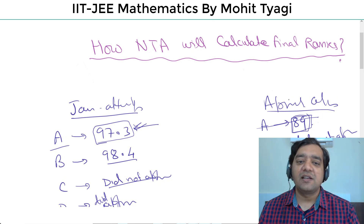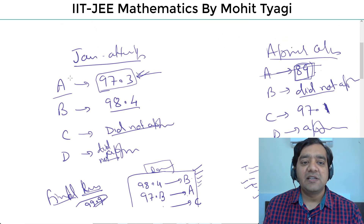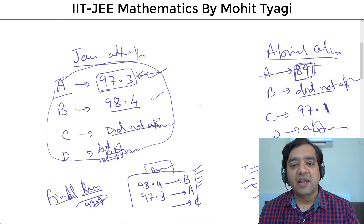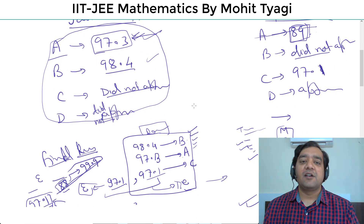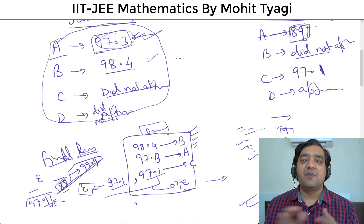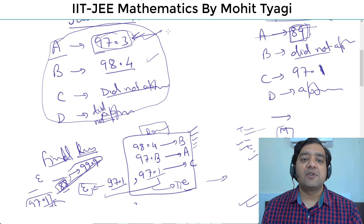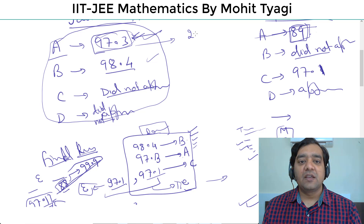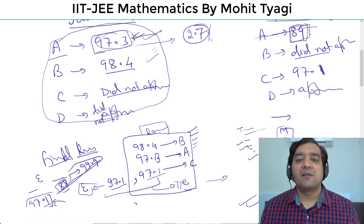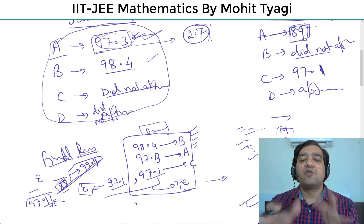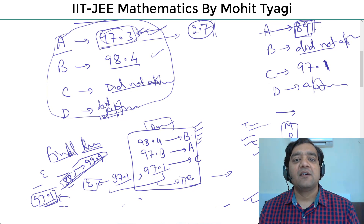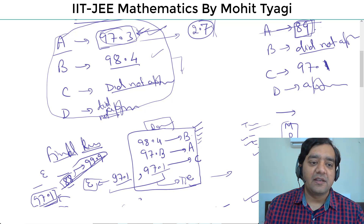इसकी technicality क्या है, इसके पीछे logical reasoning क्या है — जब मैंने ABCD 4 बना दिए, तो वो किसी भी shift में हो सकते हैं। अगर उनके percentile score यह मिले तो rank ऐसे ही prepare होगा — किसी भी shift में, tough paper हो या easy paper हो, वो सब इस percentile के अंदर अपने आप आ गया। दो shifts के बीच में कोई normalization नहीं है। 97.3 का मतलब है कि उस shift में 2.7% बच्चे उससे आगे हैं। उसी को माना गया कि total population में भी 2.7% बच्चे उससे ज़्यादा intelligent हैं। तो यह percentile as it is use होगा, इसके बाद कोई normalization नहीं है।